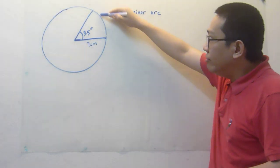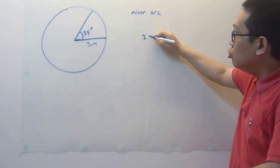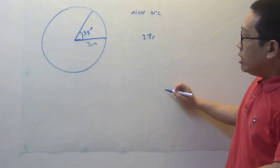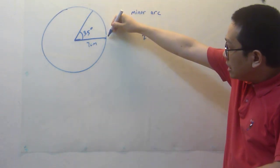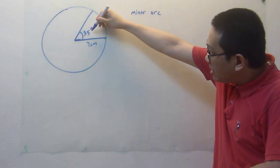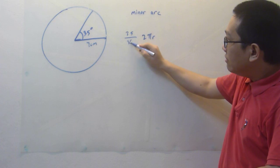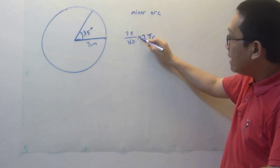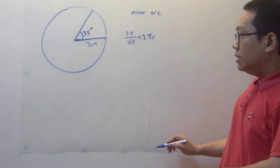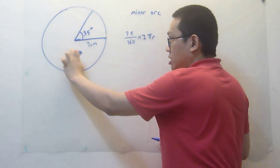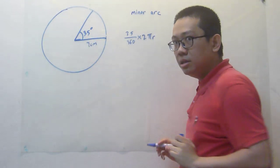As we know that in order to find the length, we use 2πr. However, I only want the arc of the 35 degree portion. So I have to use 35 degrees divided by 360 times 2πr. The reason is the whole circle is 360 and this is only 35.